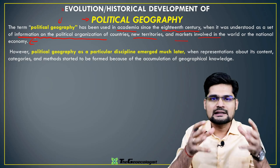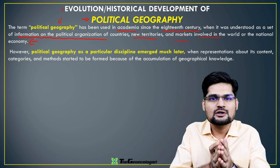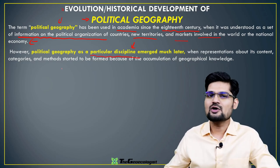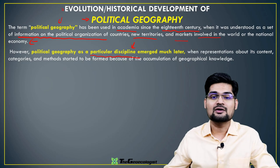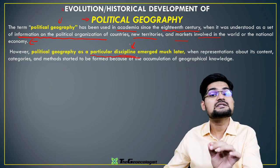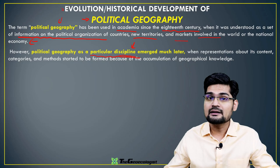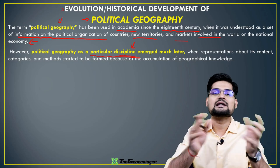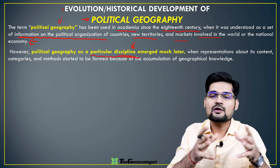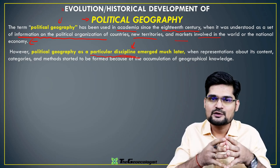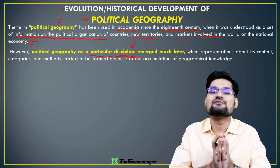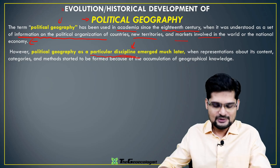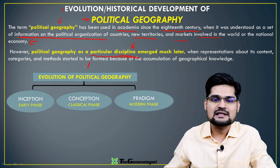Political geography played a very important role in human geography and spatial organization. As a particular discipline in the university system, it emerged much later. Earlier, the conceptual clarity, theories, and debates around it were already happening. To learn about political geography's evolution, you need to trace back its history — just as we learned with the evolution of geographical thought — looking at this phase-wise evolution.